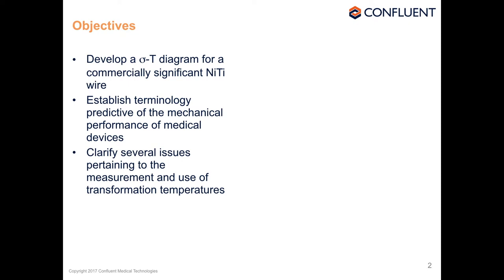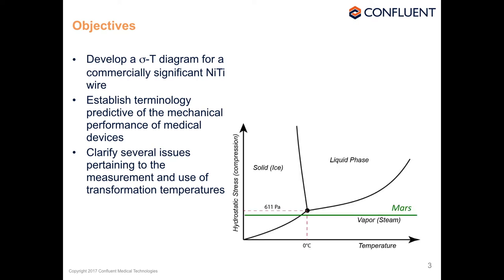To ground why this is important, here's a metaphor I like. Imagine you're on Mars. The atmospheric pressure on Mars is below the triple point of water, meaning there is no liquid phase. If you grew up on Mars, you would be unfamiliar with liquid — you would only know water as ice and vapor. An ice skater on Mars could skate almost anywhere, since water is virtually always in the solid phase.